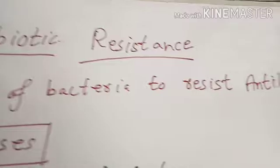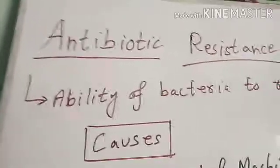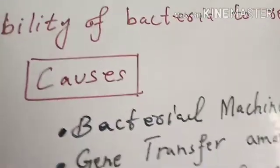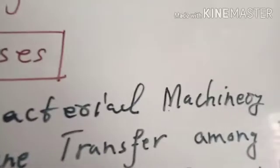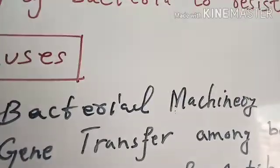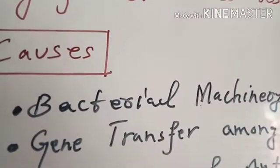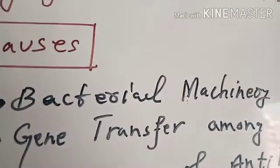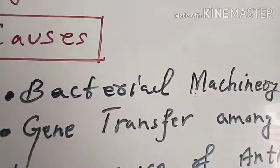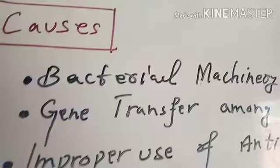How do bacteria develop resistance against antibiotics? What are the causes of antibiotic resistance in bacteria? First of all, the internal mechanism or machinery of bacteria — the metabolism and the type of bacteria — cause them to be resistant against antibiotics. The development of antibiotic resistance first develops through the bacteria's own metabolism, machinery, and internal mechanisms.